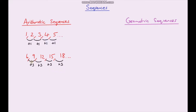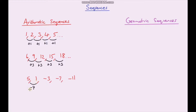We don't need to add the same amount each time — we could also subtract the same amount each time. Here, to go from one term to the next I'm subtracting four. To go from five to one I'm subtracting four, to go from one to negative three I'm also subtracting four, and likewise for the last two terms.